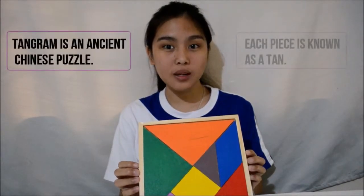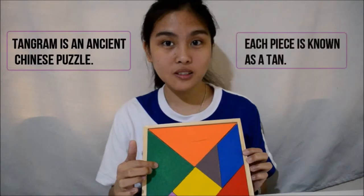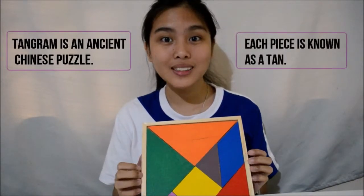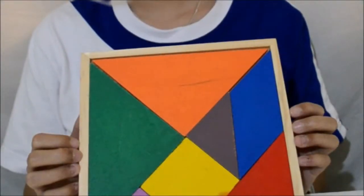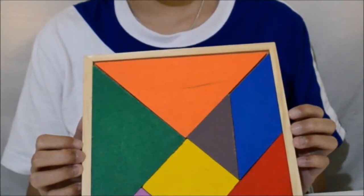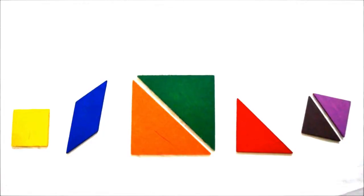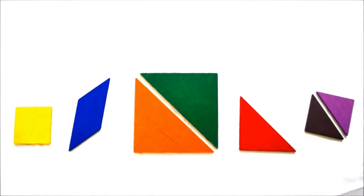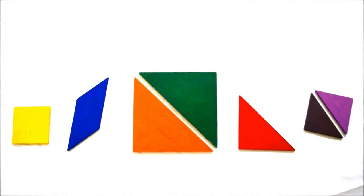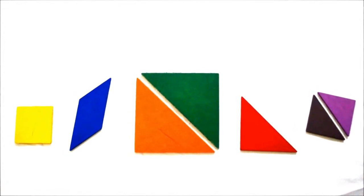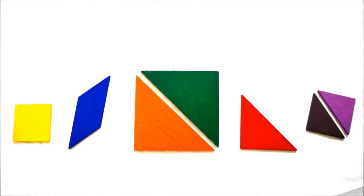Hello everyone! Here we have a tangram. This is an old Chinese puzzle and each puzzle piece is called a TAN. It can be solved through making different interesting shapes using the pieces. Shapes can be in the form of animals like a cat, objects like a key, and human figures.